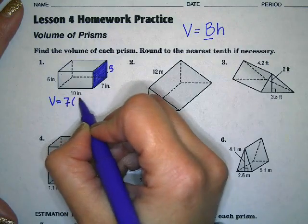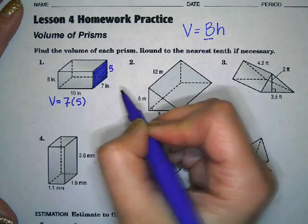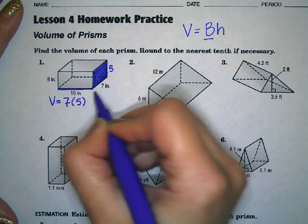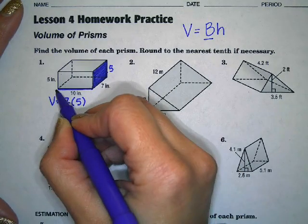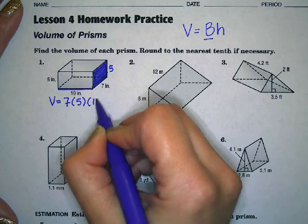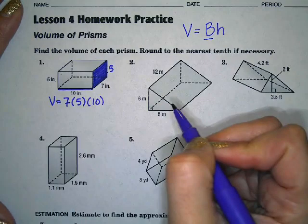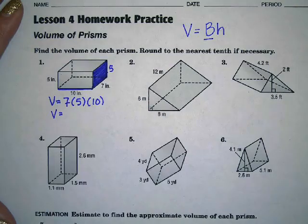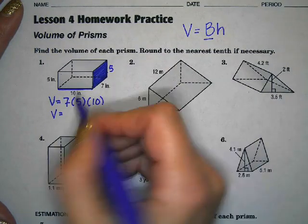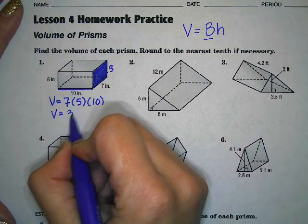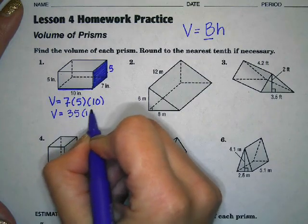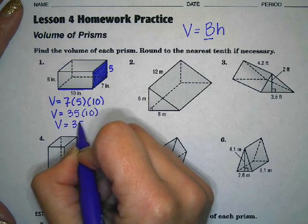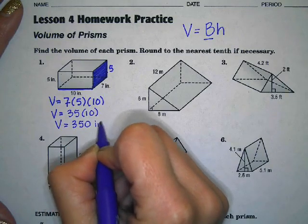Seven times five for our base, and then we're going to be multiplying it by the height, or in this case it's being pushed to the side 10 inches. So our volume is going to be equal to seven times five, which is 35, times 10. So volume is 350 inches cubed.